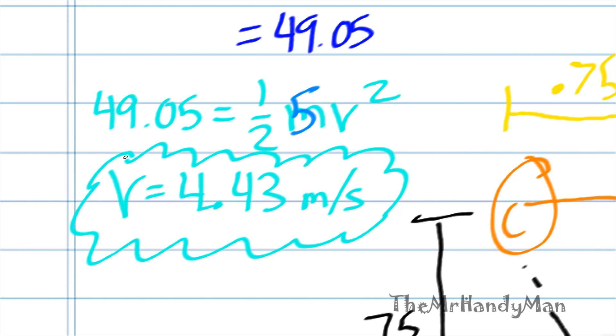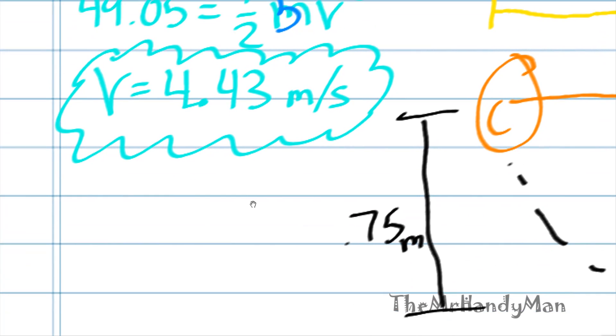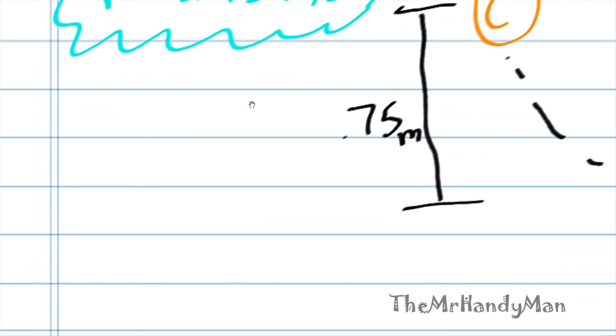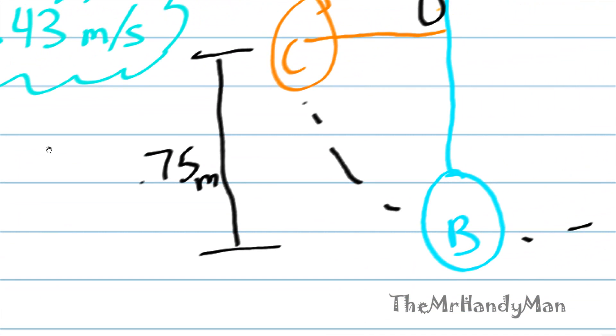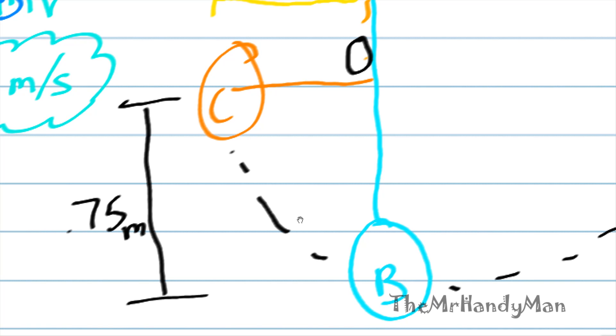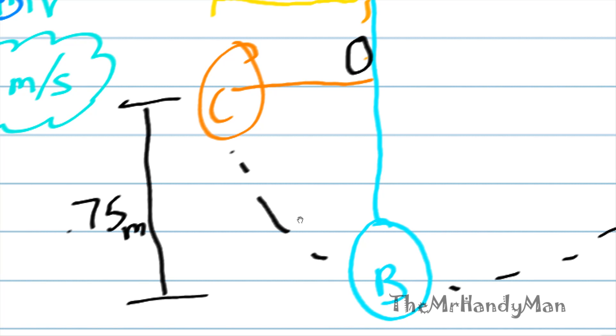Okay, so is that... I mean, what does that mean? Well, let's continue. If we go on, and we see that point B is only kinetic energy at this point. Now it raises up 0.75 meters, what's the velocity of it at that point?